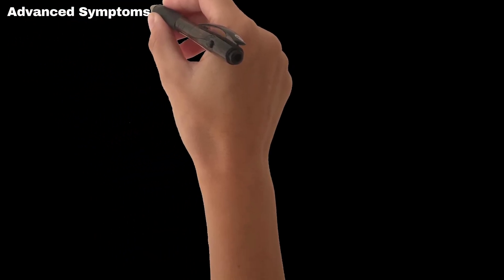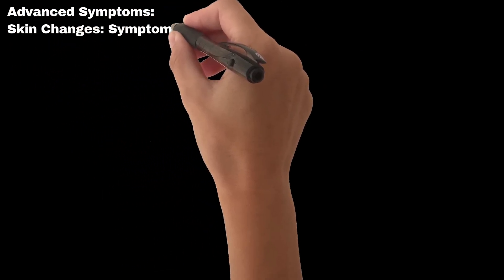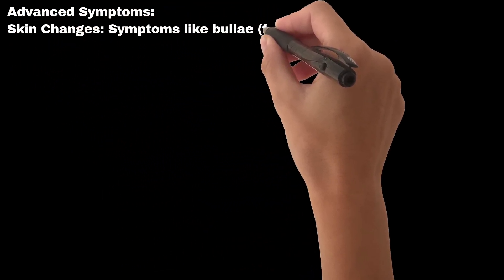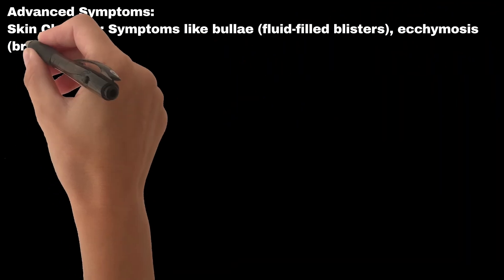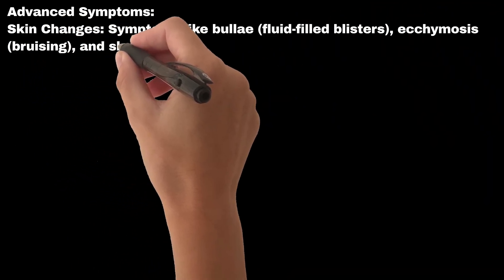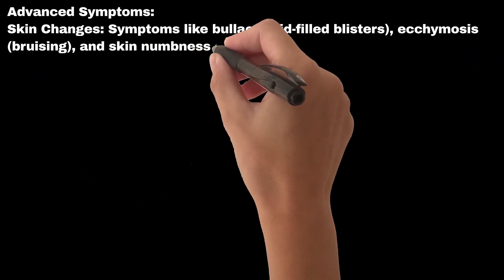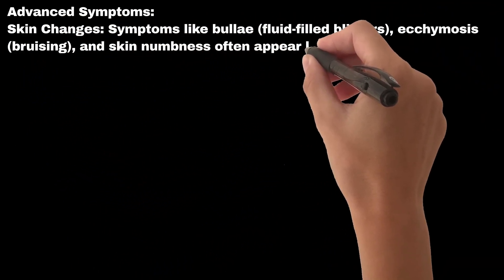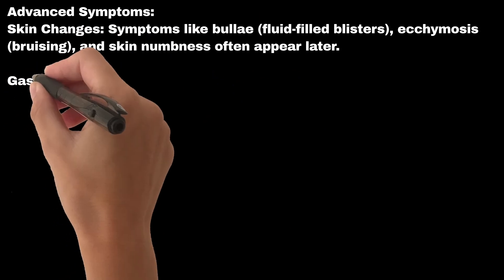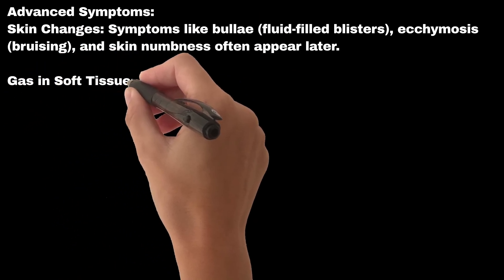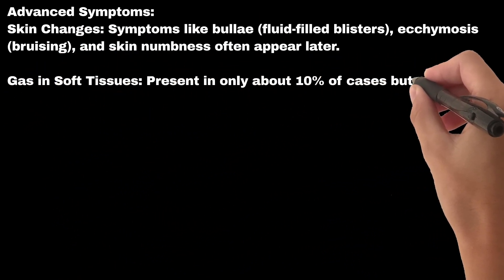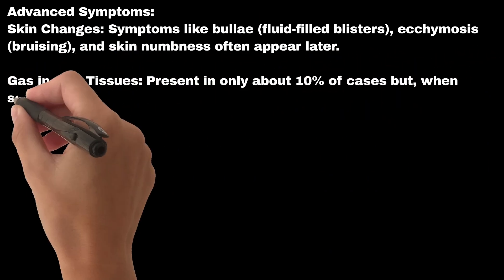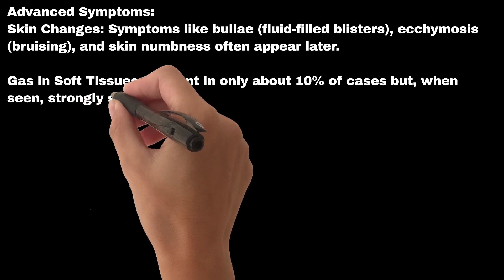Advanced symptoms — skin changes: symptoms like bullae (fluid-filled blisters), ecchymosis (bruising), and skin numbness often appear later. Gas in soft tissues is present in only about 10% of cases but, when seen, strongly suggests NSTI.